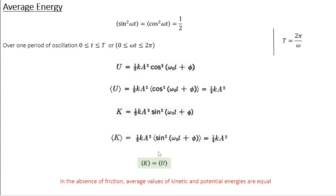The entire discussion so far applies in the absence of friction, since we only considered the conservative restoring force. The story changes completely when you include friction, which is a non-conservative force. Friction acts against the motion as a damping force. In fact, the harmonic oscillator we discussed is an ideal mathematical model. Any practical oscillator — like a simple pendulum or a clock pendulum — has some friction, making it a damped harmonic oscillator.